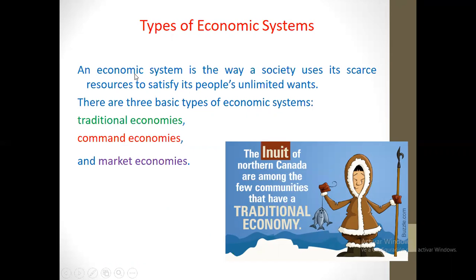What is a type of economic system? An economic system is the way a society uses its scarce resources to satisfy its people's unlimited wants. That is how a society manages its scarce resources to satisfy the unlimited desires of its people — that is an economic system.